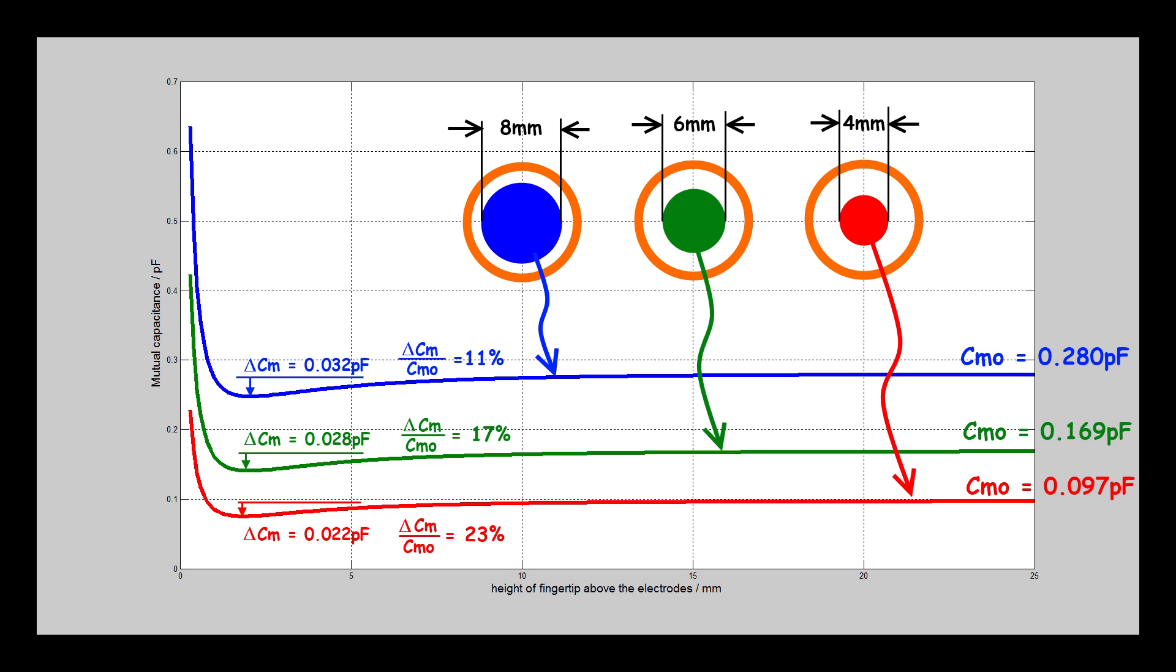Therefore, it is necessary to maintain a reasonable gap between the transmitter and the receiver, to strike a balance between ΔCM and the percentage of change, so that both the signal-to-noise ratio and the sensitivity are good.